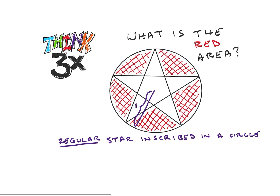The first thing I'd like to do is think about what we're going to be solving for here — let's look at the holistic picture. If I look at one of the points of the star, including going into the center — that area in green — what we're essentially trying to find is the area in red. That red area is going to be equal to the area of the circle minus five times the area of the green section. Because it's symmetrical, I can find five times the area of that green section, which gives me the total area of the star.